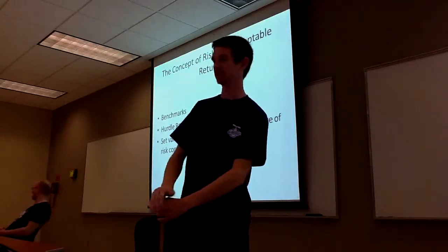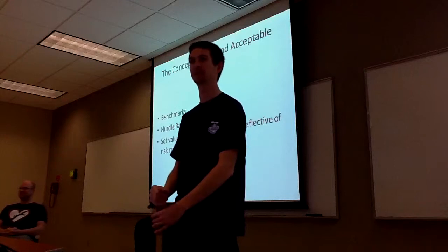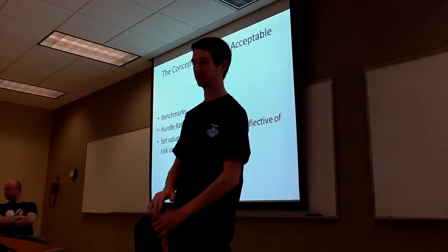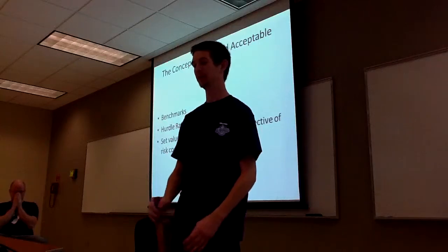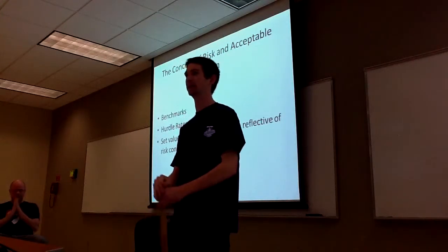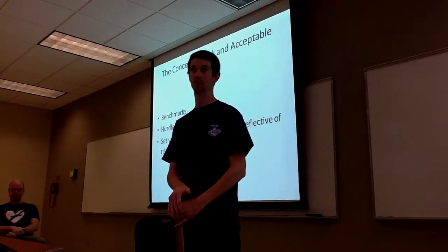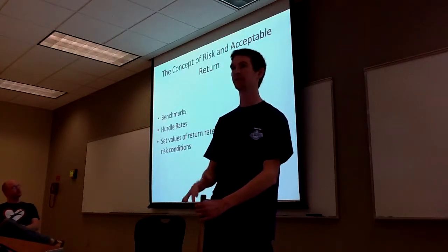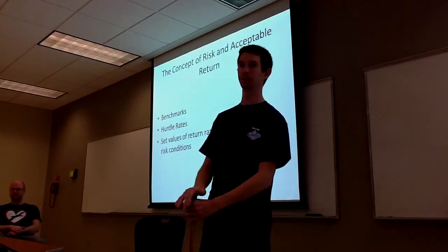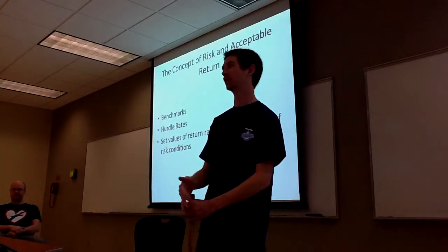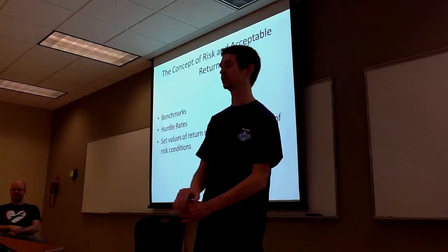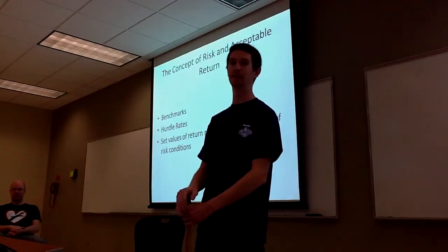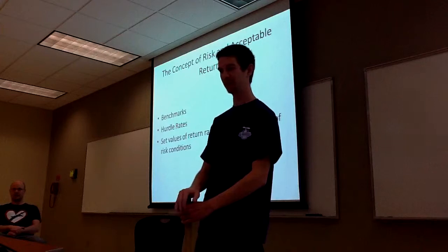Now we'll talk about the concept of risk and acceptable return. Companies will usually set benchmarks and hurdle rates — these are rates of return they want to receive from their investments. They often set return rates that are reflective of risk conditions. For example, a company building a new plant in a well-established location may have a low rate of return of around 12%, while going to a brand-new location with only preliminary consumer trials could yield a higher return of about 40%. The company has to decide if that risk is worth the higher return.